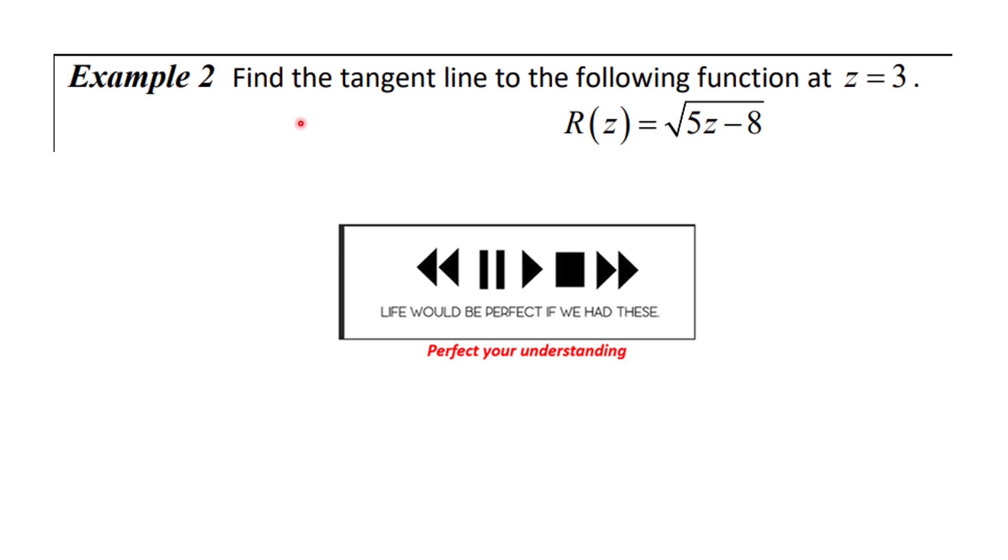So this example asks us to find the tangent line to the following function when z is 3. Now, we don't have an x, so this z is the independent variable, so z is 3. And to figure out what y is, you have to substitute into this equation. We want to find the tangent line to this curve. And again, this is an equation that we found the derivative of in the previous example. You know what to do. Let's see how you did.